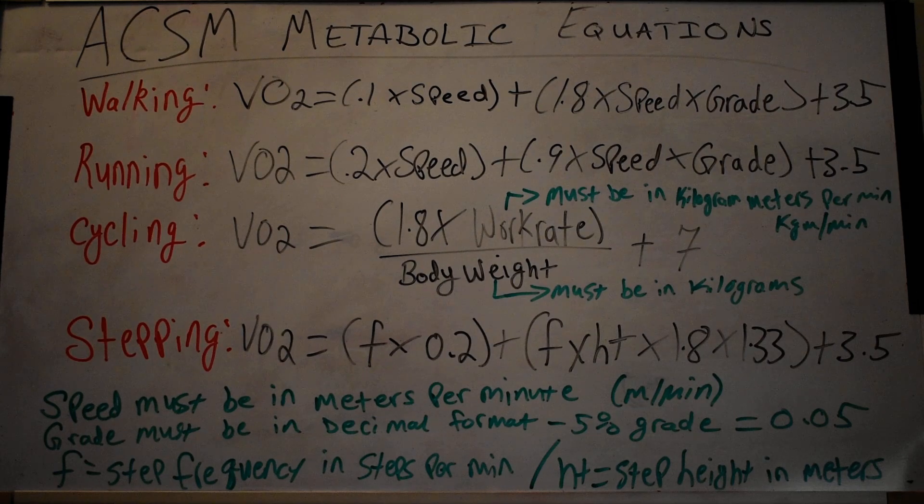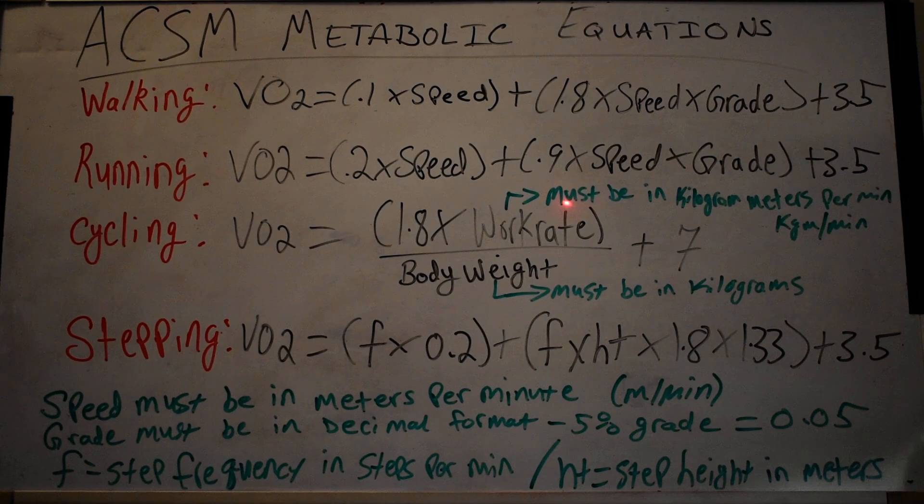And again, body weight must always be in kilograms—take the body weight, divide it by 2.2, that will give you the weight in kilograms. So for walking and running, your speed must be in meters per minute. Take the speed, multiply it by 26.8—that will give you meters per minute. Your grade must be in a decimal format. So if it's a 5% grade, you will plug 0.05